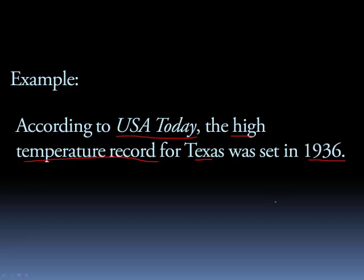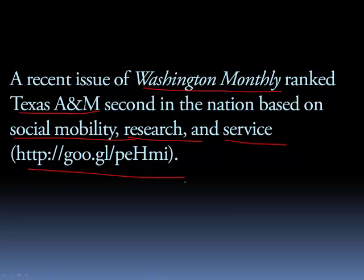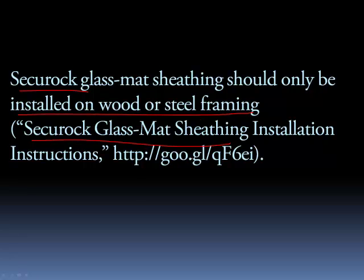Notice we have a source, a claim, a date, and a location — you should be able to verify this fact. Another example: a recent issue of Washington Monthly ranked Texas A&M second in the nation based on social mobility, research, and service, with a link provided. Also: Secure Rock glass mat sheathing should only be installed on wood or steel framing — we have the product name, a specific claim, the document title, and a URL for checking. These are all facts.